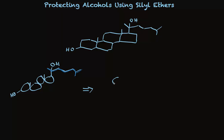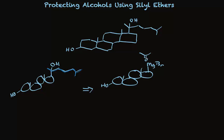We know that when we have a tertiary alcohol, there are actually three possible ways using a Grignard reaction that we could make this molecule. One of the possible options would be to start with this tetracyclic molecule with the OH here and have a Grignard reagent attached here. That Grignard reagent would then be reacting with a ketone. So these would be the two components in our synthetic strategy for making this target.